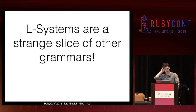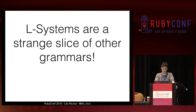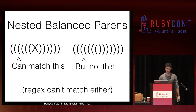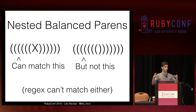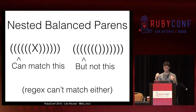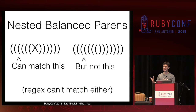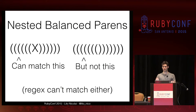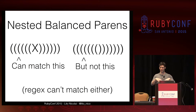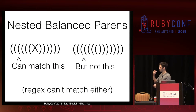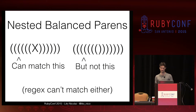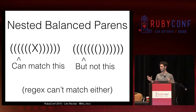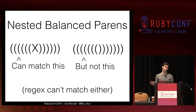L-systems are a strange slice of other grammars. Let's take the example of matching nested balanced parentheses. We know we can do this with a context-free parser, same as HTML — you keep track of how deep you are and just keep recursing down. But an L-system can only match this structure if there's a token in the middle. We can make a rule saying token X maps to X with parentheses around it, and iterate on that to get nested balanced parentheses. But if there's no token in the middle, the L-system just can't conceive of that structure — you cannot match it. And as we know, if there are an arbitrary number of balanced parentheses, you're absolutely out of luck with regular expressions.